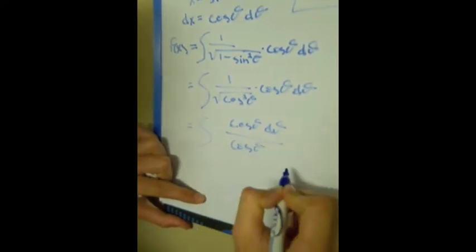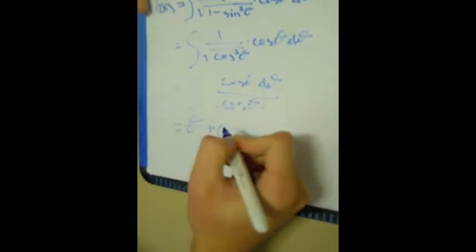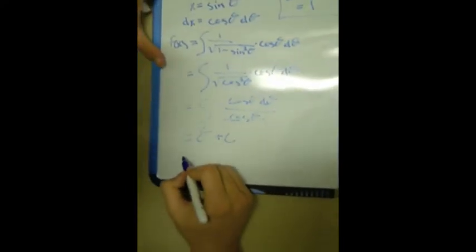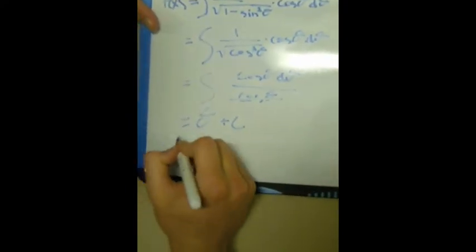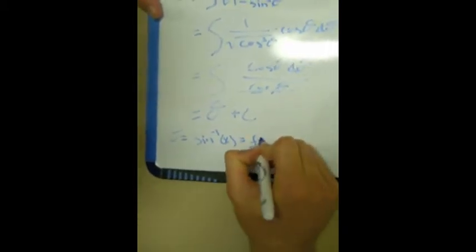The square root of cosine squared theta is cosine theta, which makes it much easier. We got rid of our square root sign, which is what we wanted to do. And then these cancel, so this equals theta plus a constant. Now we have to substitute back in. Since x equals the sine of theta, we take the inverse sine of both sides, so theta equals the arc sine of x.